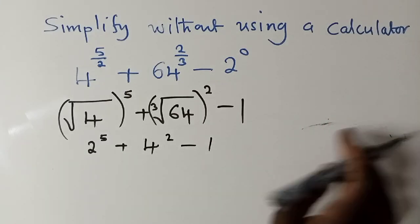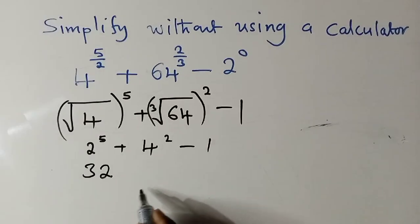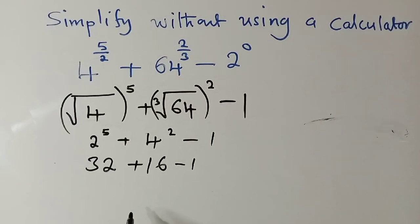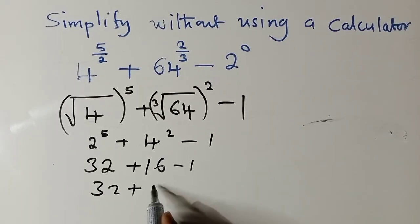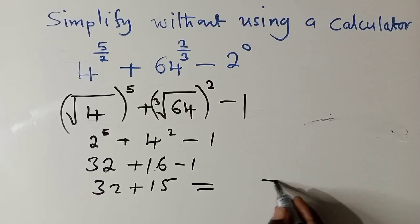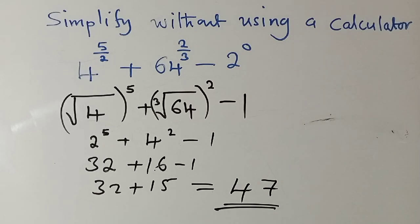So now: square root of 4 is 2, and 2 to the power 5 is 32. Then 4 squared is 16. And 2 to the power zero is 1. So we get 32 plus 16 minus 1, which equals 47. If you found 47, you got it right! Don't forget to subscribe to my YouTube channel. This is lesson three of six on indices — keep watching all the lessons. Thank you, bye bye.